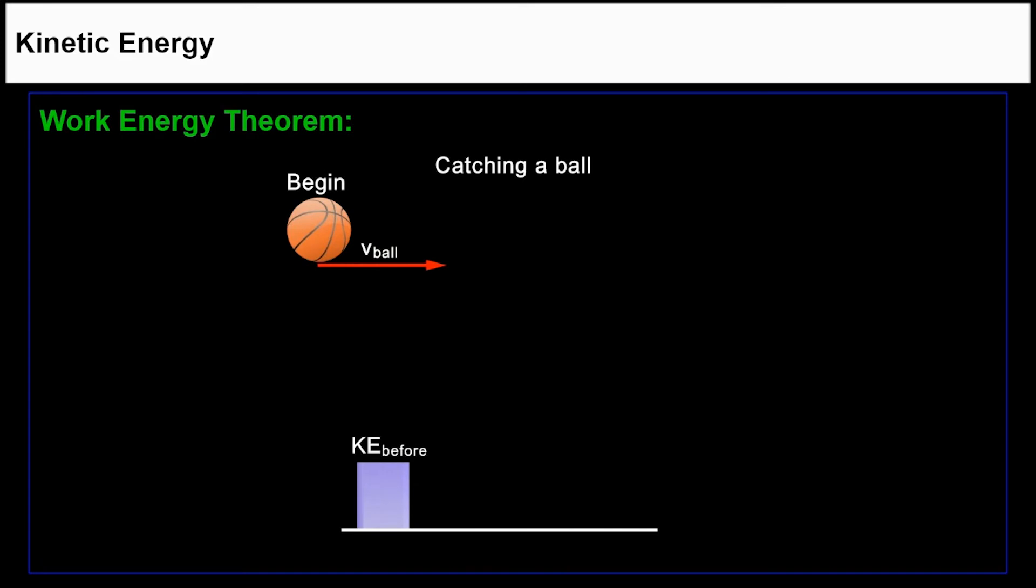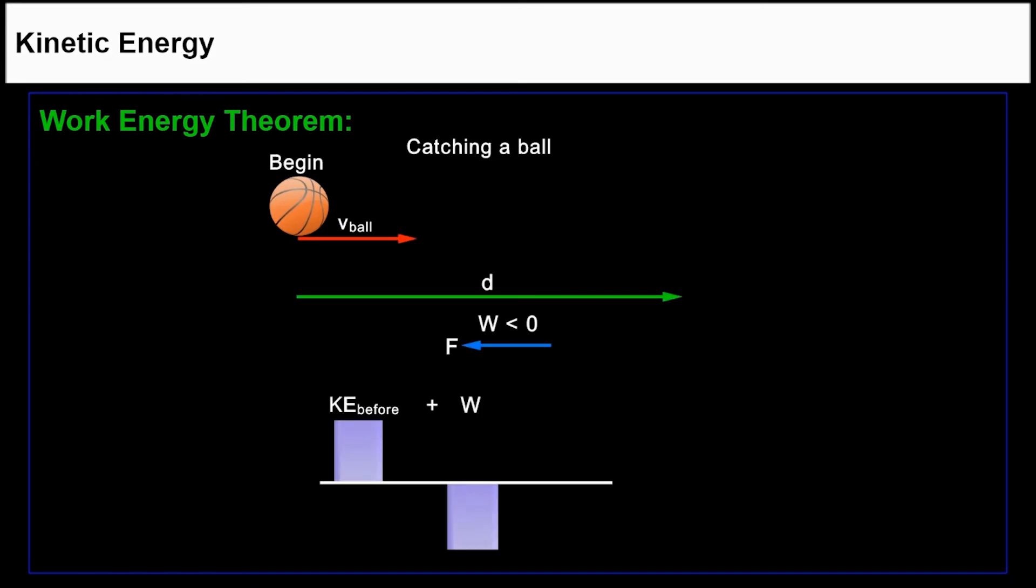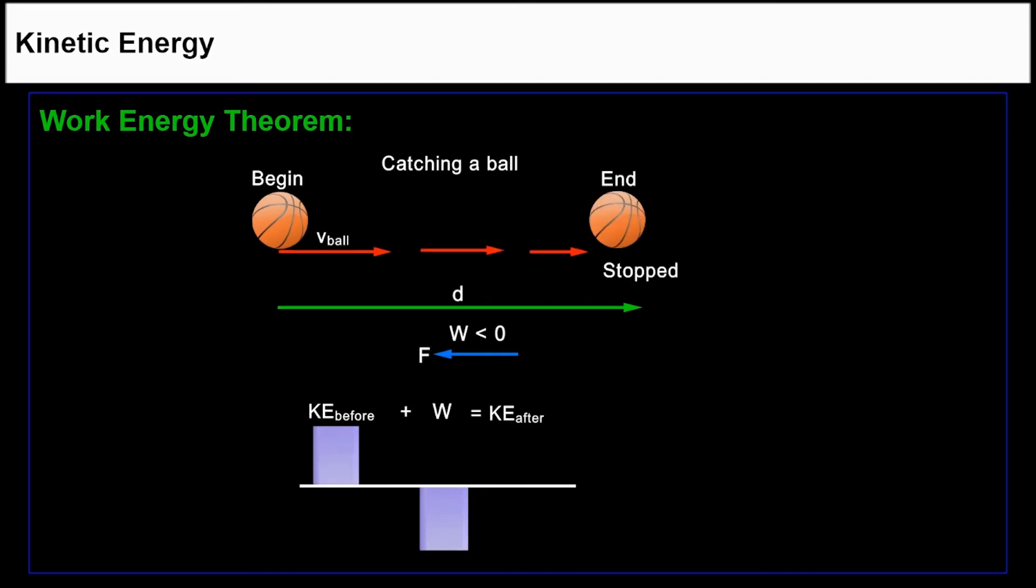In the next example, assume a ball is moving with velocity v and we apply a force f in the opposite direction of its motion, causing the ball to stop after displacement d. The work done will be negative, and this causes its kinetic energy to decrease to zero.